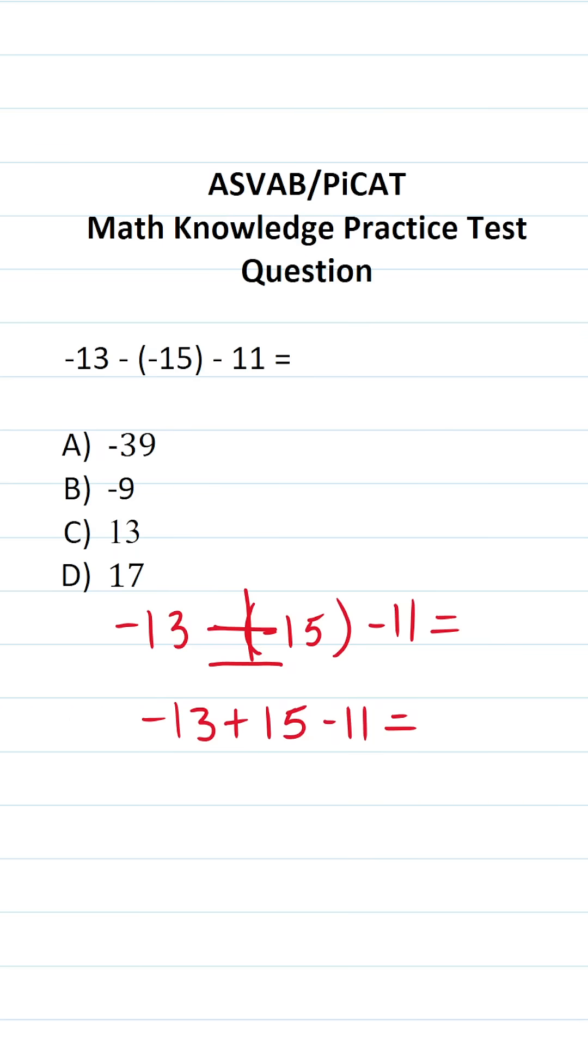Let's go ahead and work this out from left to right. Negative 13 plus 15. Well, that's the same thing as 15 minus 13, which is 2. So this becomes 2 minus 11. 2 minus 11 is negative 9.